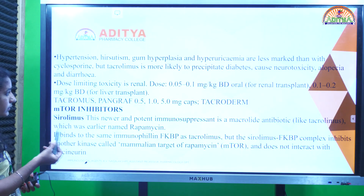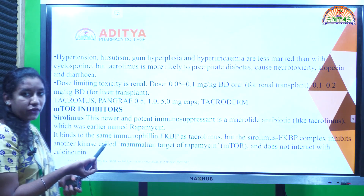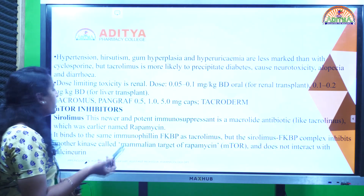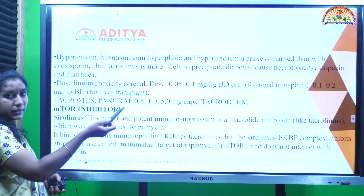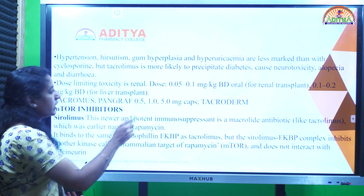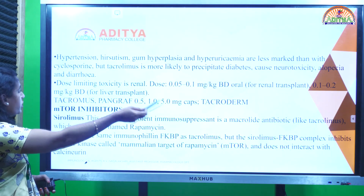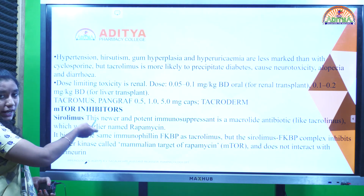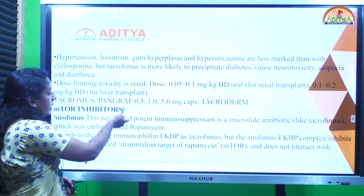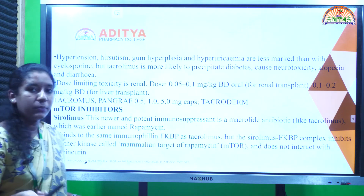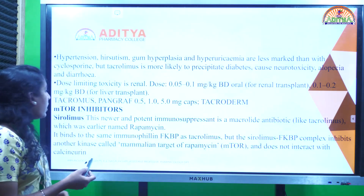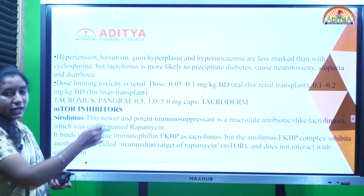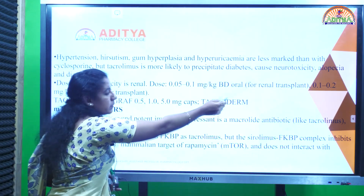The dose of tacrolimus is 0.05 to 0.1 mg/kg twice a day orally for renal transplant, and 0.1 to 0.2 mg/kg twice a day for liver transplant. It is sold under the names Tacrolimus/Tachromas/Fungraf in 0.5 mg, 1 mg, and 1.5 mg capsules, and as Tachroderm for topical application in dermatitis conditions.